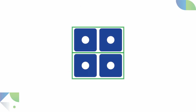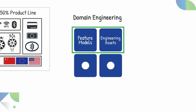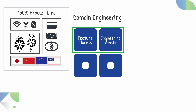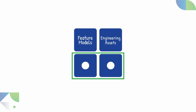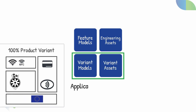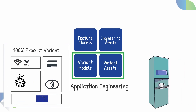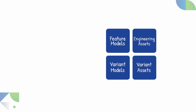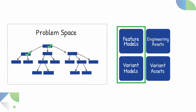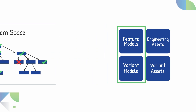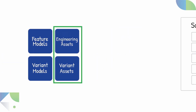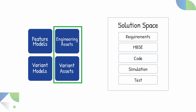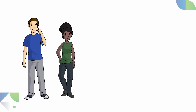The four steps can be grouped in two different ways. In the top level, called Domain Engineering, the product line is developed in a 150% context. Whereas in the lower level, called Application Engineering, everything is in a 100% variant-specific context. The left side is called the Problem Space, where the product variability is controlled centrally in Pure Variance by using features. The right side, called Solution Space, refers to all assets within the engineering tools in which Pure Variance is integrated.